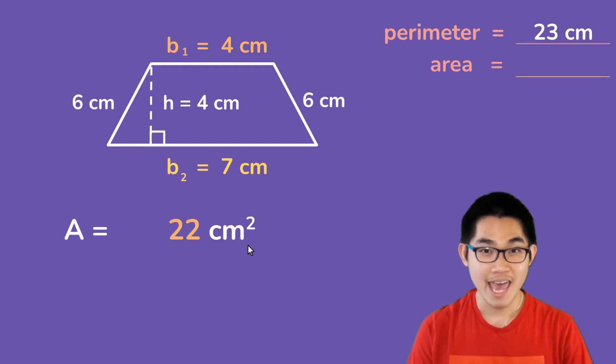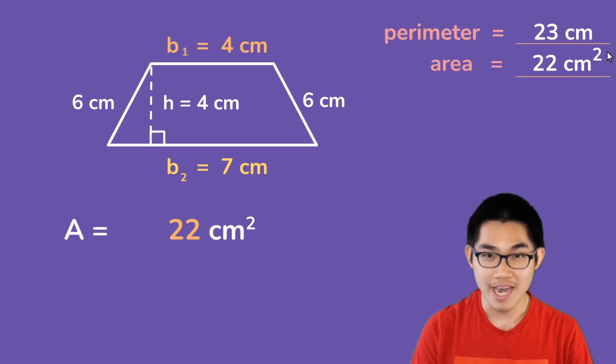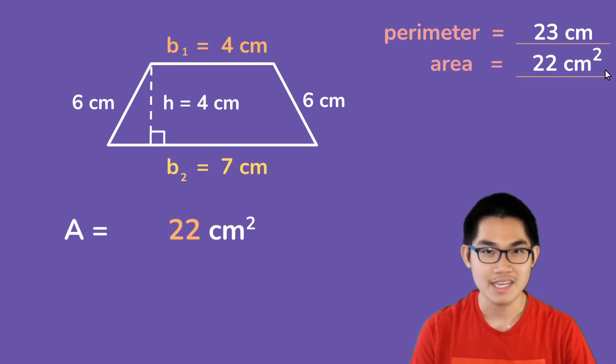And so, the area of this trapezoid is 22 centimeters squared, and don't forget to put the number 2 up here because that's the unit of the area.